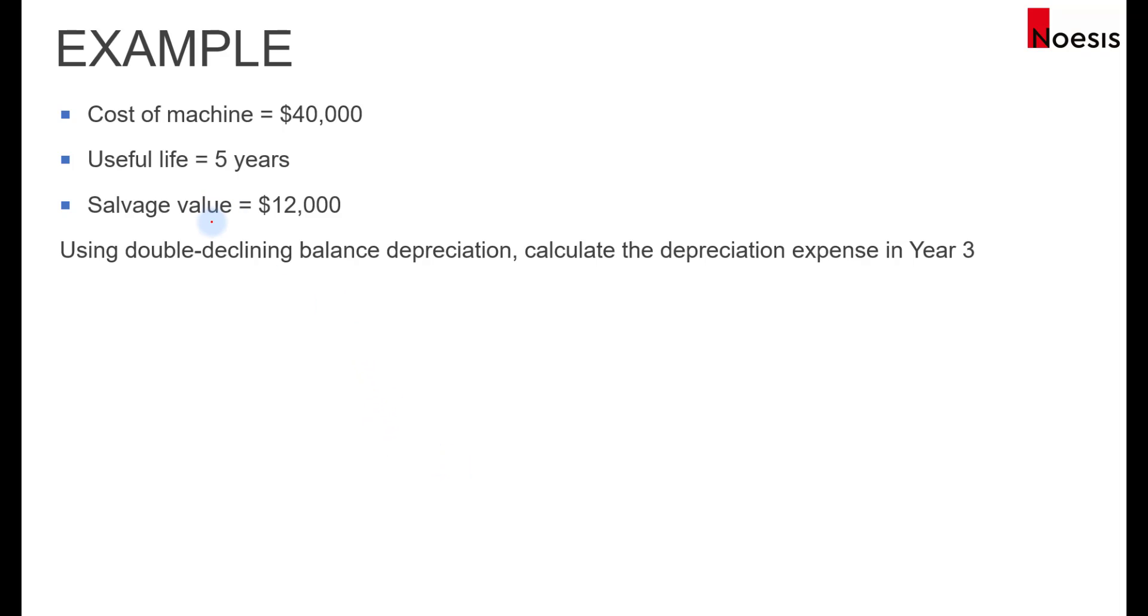Let's look at an example where the cost of machine is $40,000 with a useful life of 5 years and a salvage value of $12,000. Using double declining balance depreciation, calculate the depreciation expense in year 3.